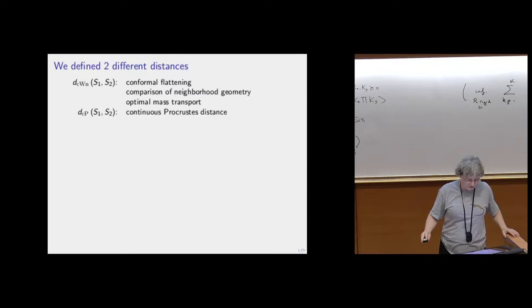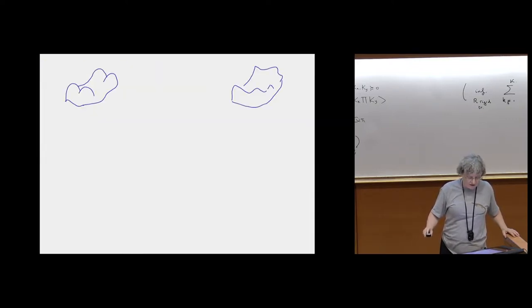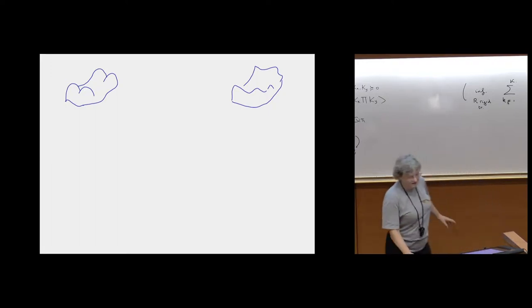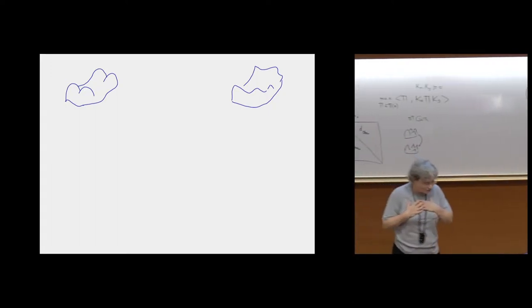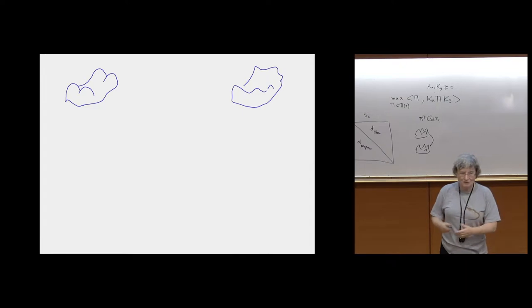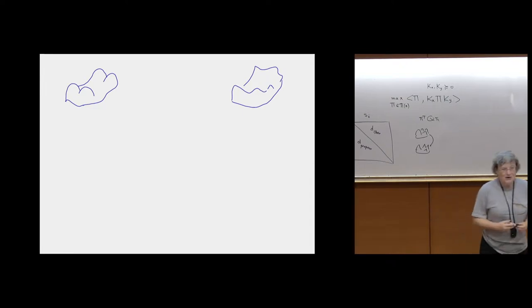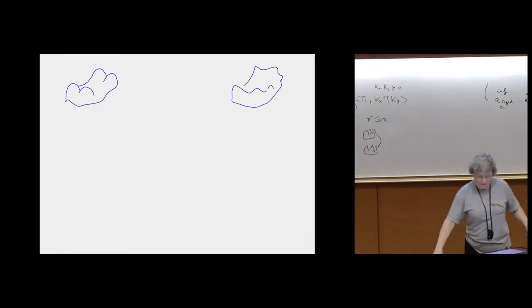We defined two different distances. One distance — the one I was emotionally most attached to, but which we don't use anymore — was the conformal Wasserstein neighborhood distance.